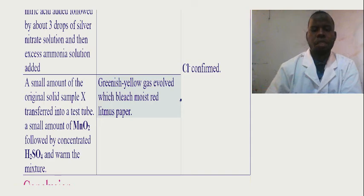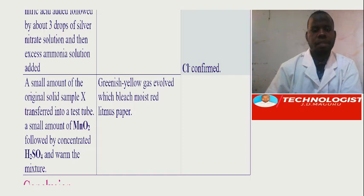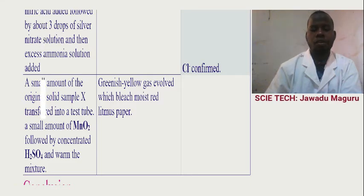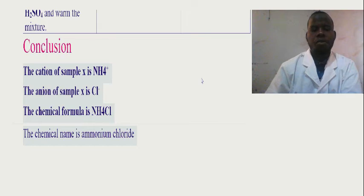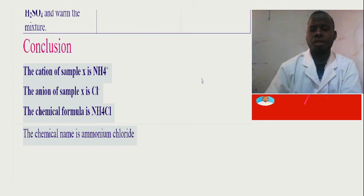That is our report in general for the unguided question. At the conclusion: the cation of sample X is ammonium ion, the anion of sample X is chloride ion, and the chemical formula is NH₄Cl — ammonium chloride. The chemical name is ammonium chloride.